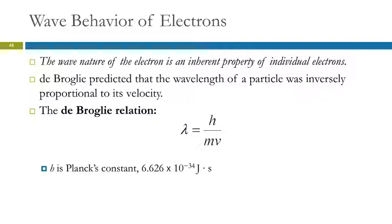And so de Broglie predicted that the wavelength of a particle was inversely proportional to its velocity. So this is what's known as the de Broglie relation. Here we have the wavelength of the particle is equal to Planck's constant divided by the mass times the velocity. That's the velocity, not the frequency. I know, we can't tell, right? There's Planck's constant again.